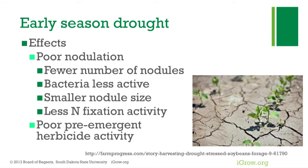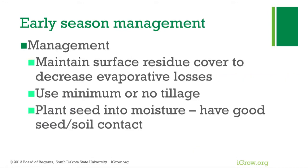For early season drought management: maintain surface cover to decrease evaporative losses, use minimum or no-tillage, and plant the seed into moisture. If you need to, plant just a little bit deeper than normal — but not too deep, or you won't get a good stand. Going just slightly deeper may help you reach available moisture.